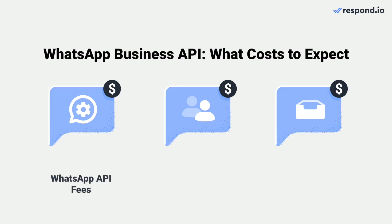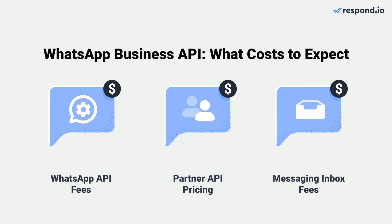Before signing up for a WhatsApp API account, you'll first need to understand how WhatsApp pricing works. Here are some of the costs to expect. One, WhatsApp API charges based on 24-hour conversation sessions. Two, some WhatsApp partners charge a markup on top of the WhatsApp API conversation fees. Three, the cost of a messaging inbox, since WhatsApp API has no front-end interface.